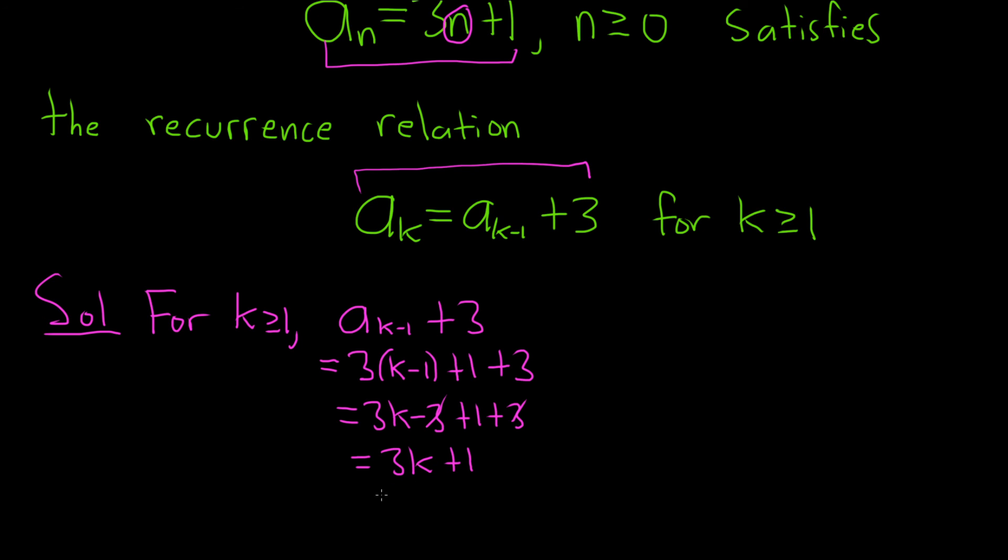But that's the same thing as $a_k$. So it works out quite nicely. So we've shown that $a_k = a_{k-1} + 3$ for $k \geq 1$. So we've shown that it satisfies this recurrence relation.